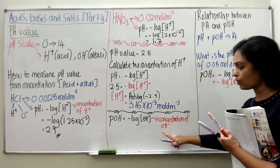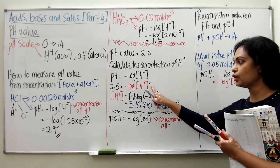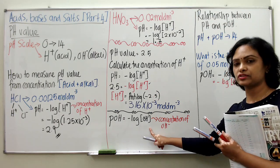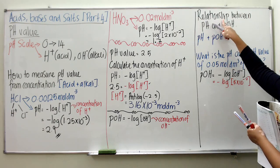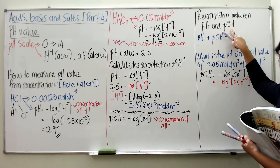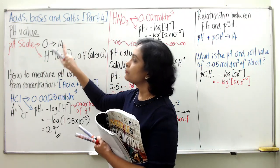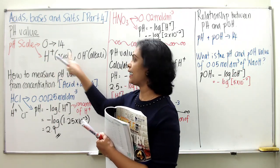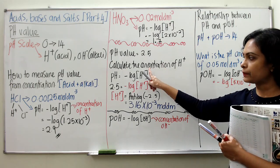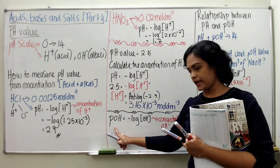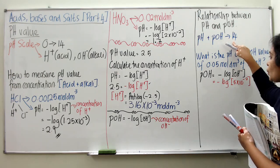Let's look at the relationship between pH and POH. When given the concentration of hydroxide ion, you use the same technique as for hydrogen ion. The pH scale ranges from 0 to 14 and is the combination of acidity and alkalinity. When you combine pH and POH, you are supposed to get a total of 14.